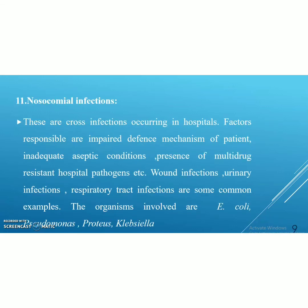Nosocomial infections are examples of cross infections acquired from hospitals. Factors responsible include impaired defense mechanisms of the patient, inadequate aseptic conditions, and the presence of multi-drug resistant pathogens in the hospital. Wound infections, urinary tract infections, and respiratory tract infections are common examples. The main organisms involved are E. coli, Pseudomonas, Proteus, and Klebsiella.